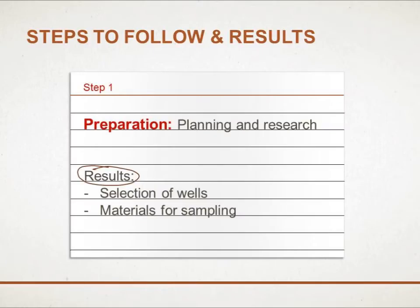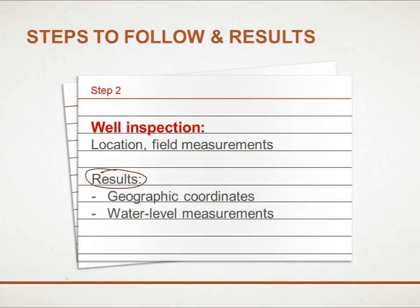We proceed from the assumption that the well is in a good location and has been built properly. The next task is to collect representative water samples for further analysis. Groundwater sampling consists of five principal steps. The first step, preparation, involves selecting the wells from which to collect samples and gathering the materials needed to carry out the sampling. The second step,